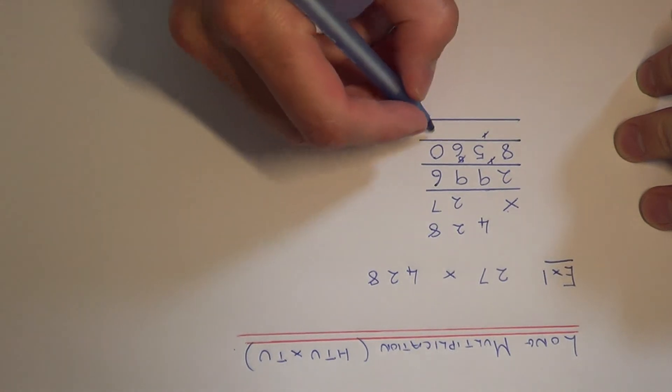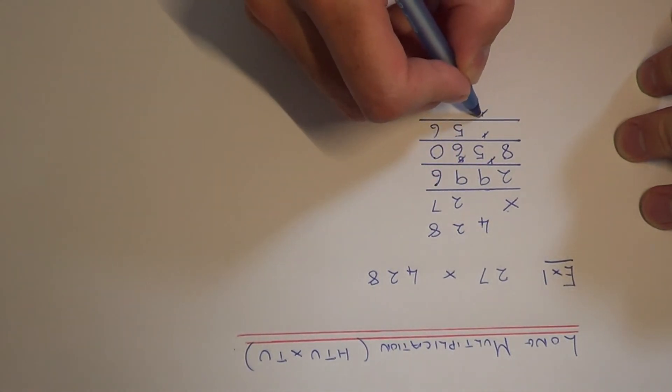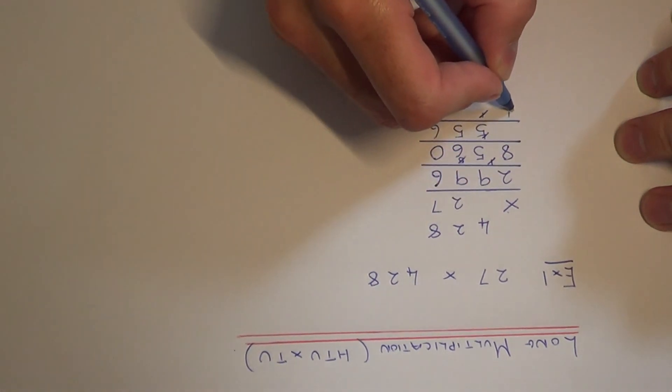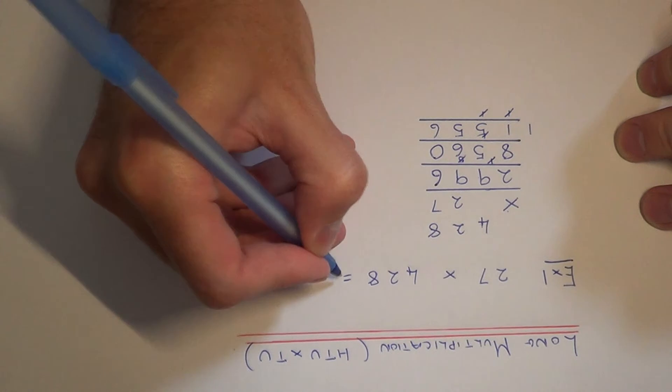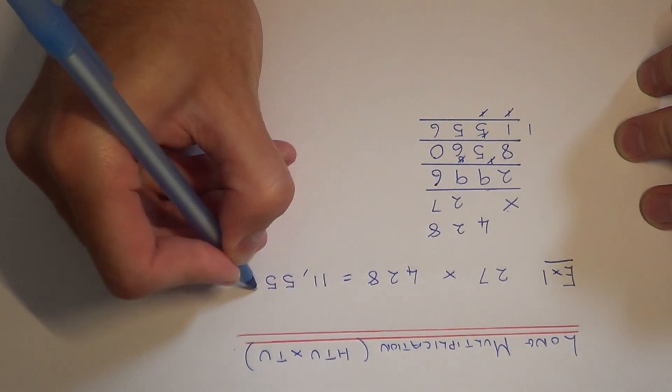So 6 add nothing is 6. 9 add 6 is 15. 9 add 5 add 1 is 15 again. And 8 add 2 plus the 1 makes 11. So our final answer is 11,556.